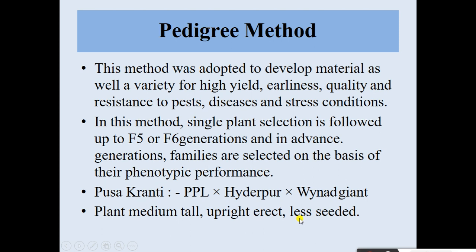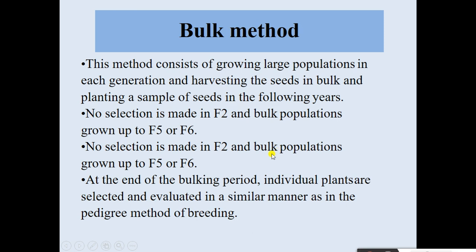Pusa Kranti is a cross between Pusa Purple Long × Hyderpur × Giant varieties. The plant is medium tall, upright, erect, and less seeded. These are the important characteristics of Pusa Kranti cultivar.